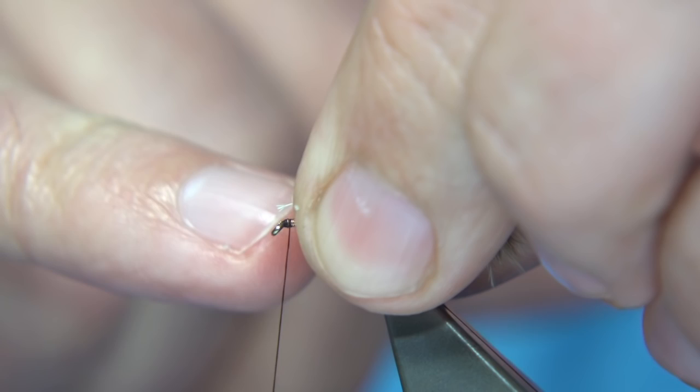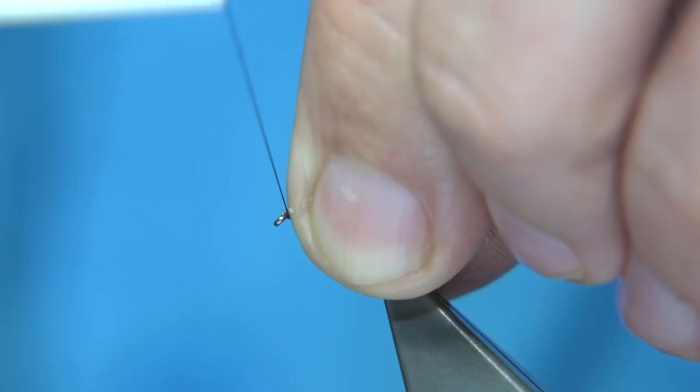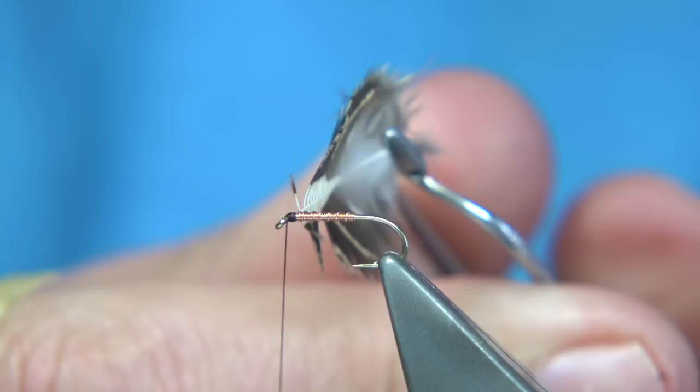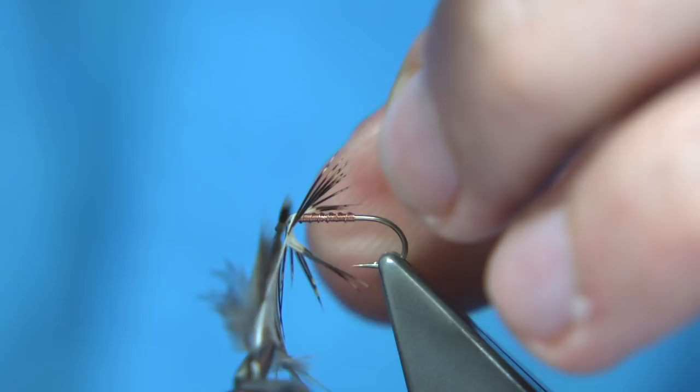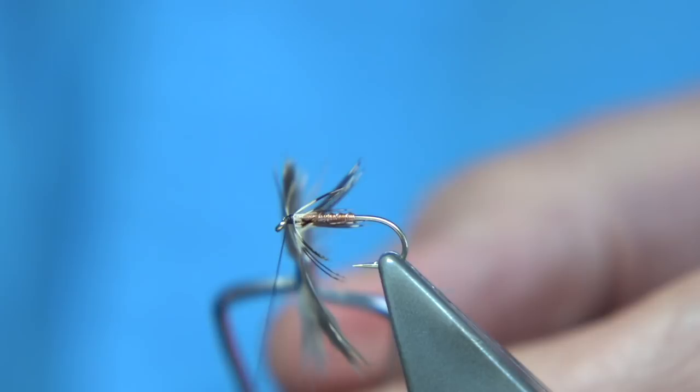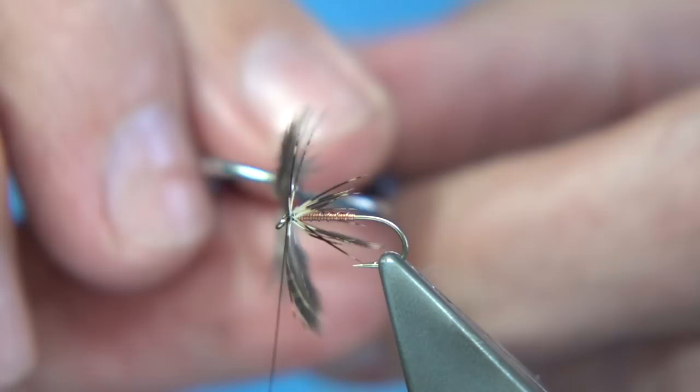Now, I'm going to use the hackle pliers to tie this. Now, again, like I did with the hen, I'm just going to fold back these fibers and wind, one turn in front of the other. Now, just get the start right, there we are. These are strong little hackles, that's plenty of hackle there, just follow up with that last turn, nice and tight.